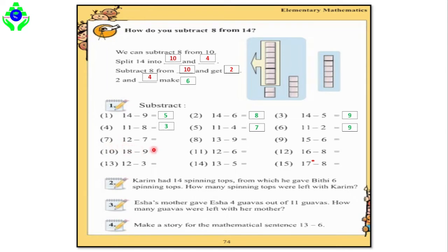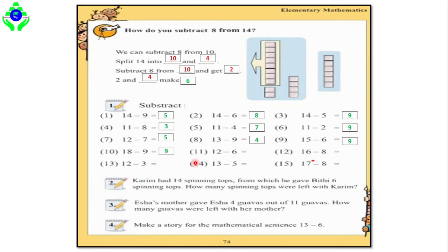Question number 7: 12 minus 7 equals 5. Question number 8: 13 minus 9 equals 4. Question number 9: 15 minus 6 equals 9. Question number 10: 18 minus 9 equals 9. Question number 11: 12 minus 6 equals 6.